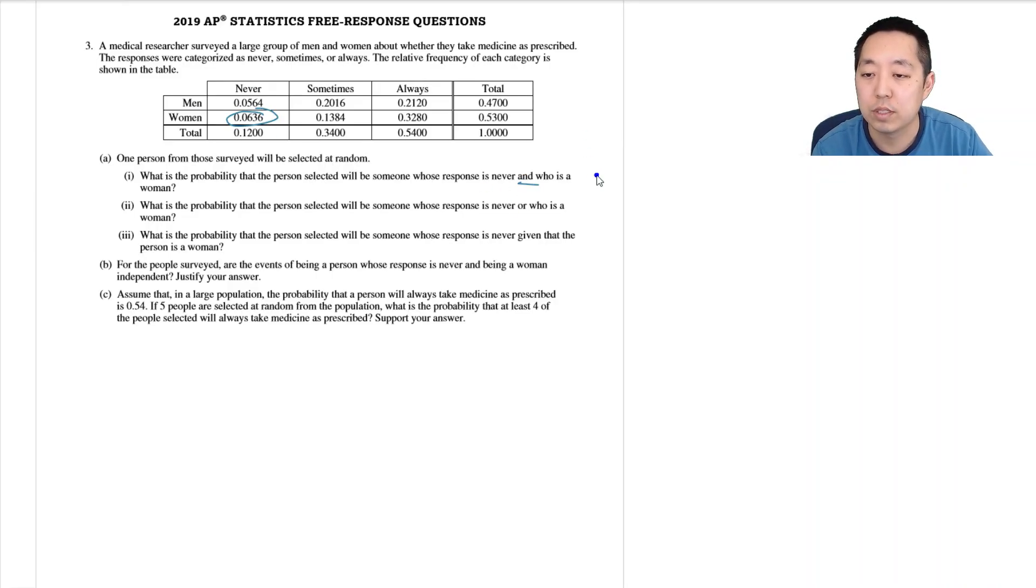So never and a woman is this one right here, so that's 0.0636. What is the probability the person selected will be someone whose response is never or who is a woman?